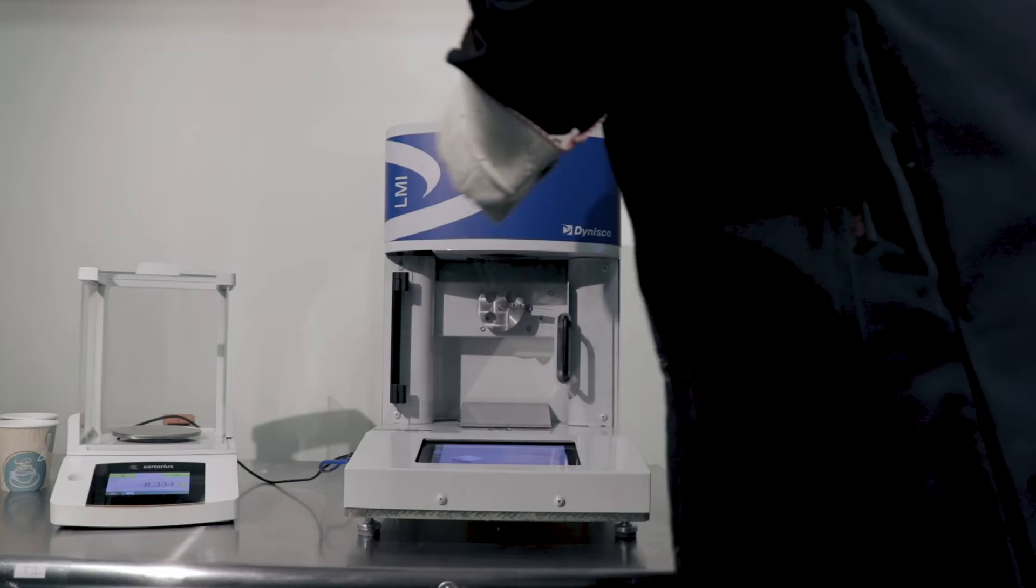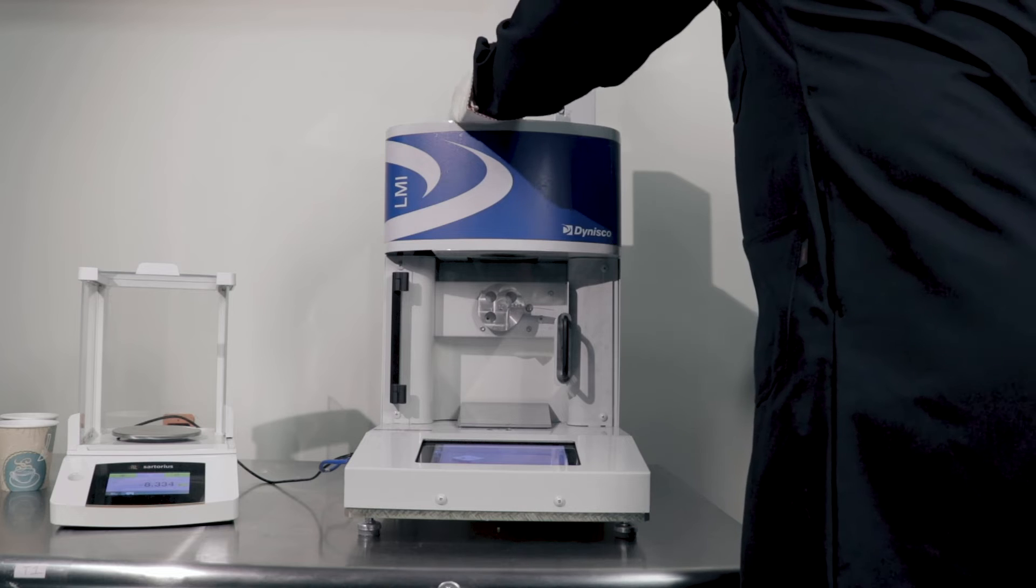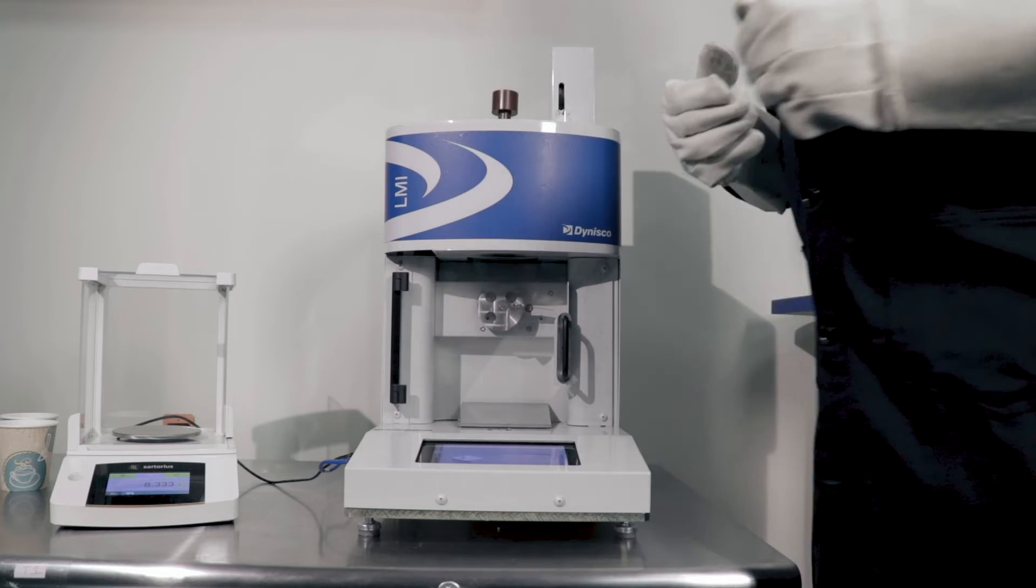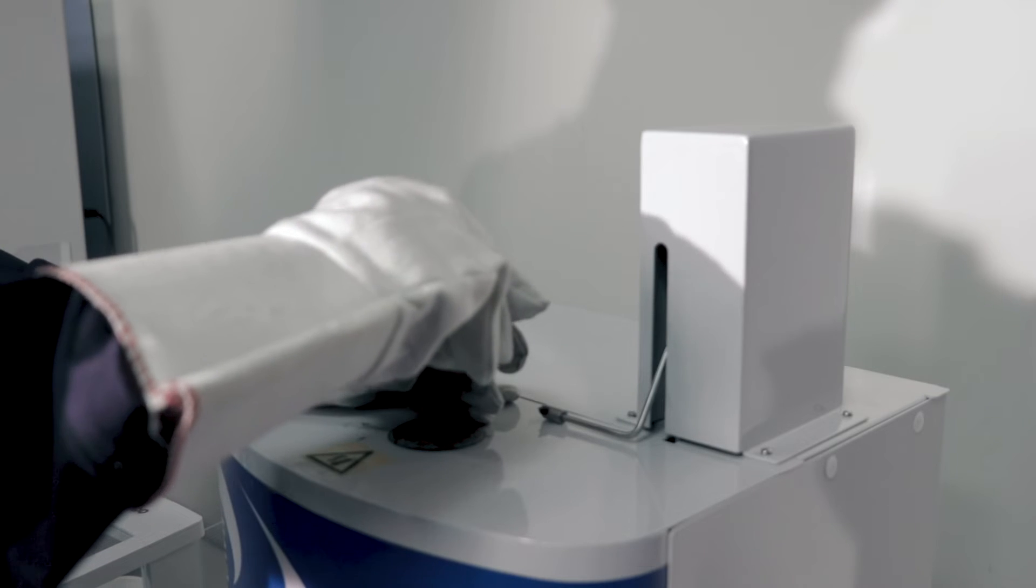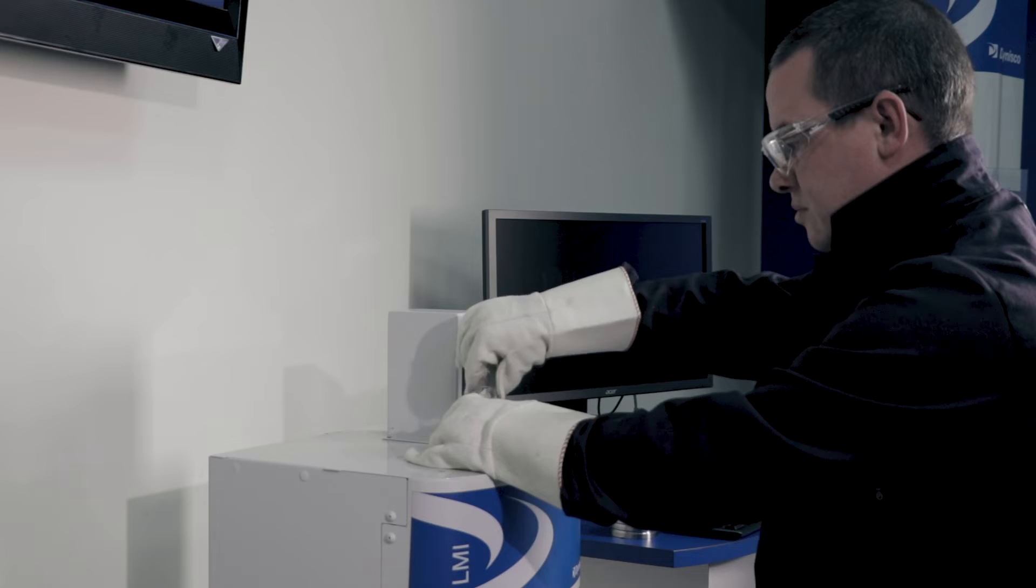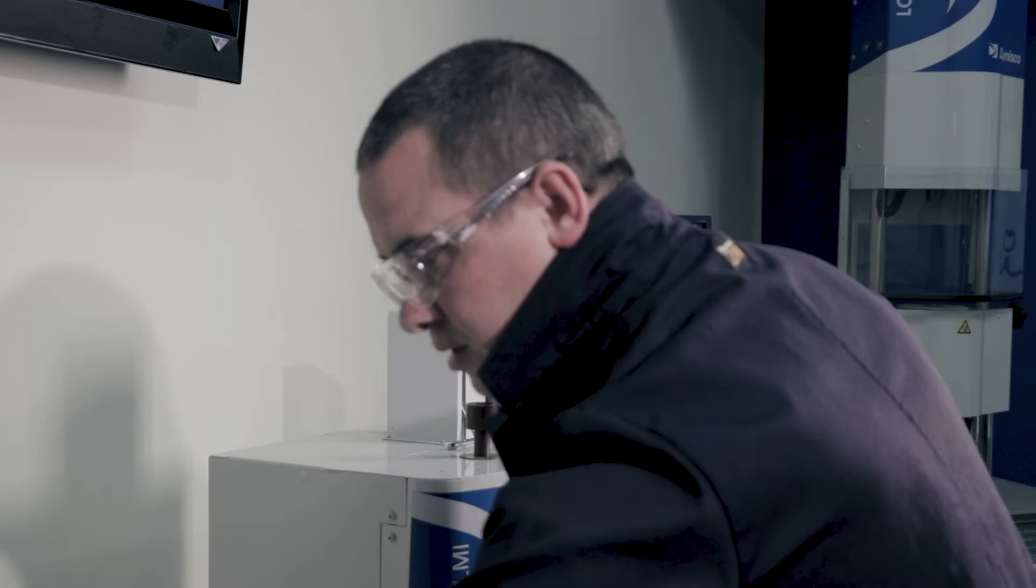Next, 5 grams of polymer is manually packed into the barrel of the LMI 5500. The operator will use the fill funnel that is included in the toolkit to aid in filling the barrel chamber. A manual packing device is used to compact the charge of material in the barrel.